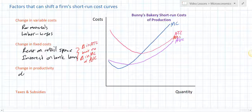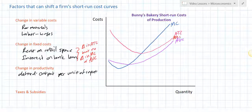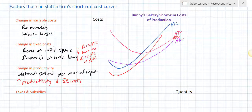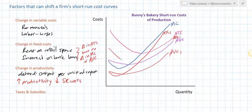Let's move on to productivity. Productivity is simply defined as the output per unit of input. An increase in productivity means that the bakery is getting more loaves of bread for every oven, for every worker, for every square foot of retail space — the output of the bakery is increasing without having to acquire more inputs. If you can produce more output for every unit of input, your per unit costs are decreasing. So an increase in productivity decreases short-run costs of production. Assume that the bakery hires more skilled employees — more skilled employees can produce more output for every unit of input, lowering the marginal cost, lowering the average variable cost, and lowering the average total cost. Increased productivity will shift all of the short-run costs of production down.